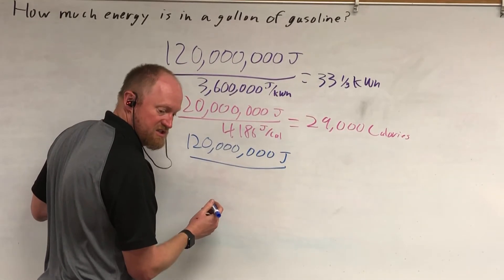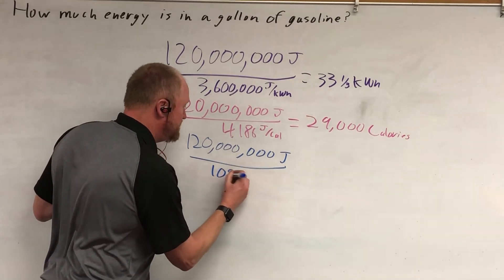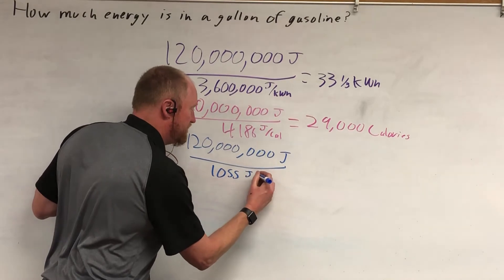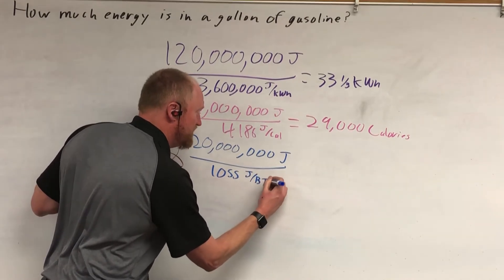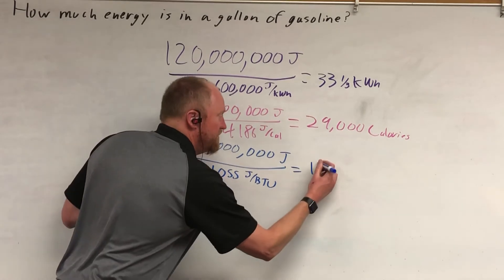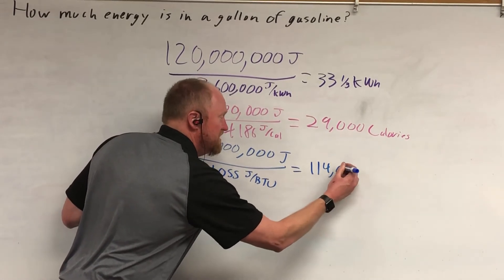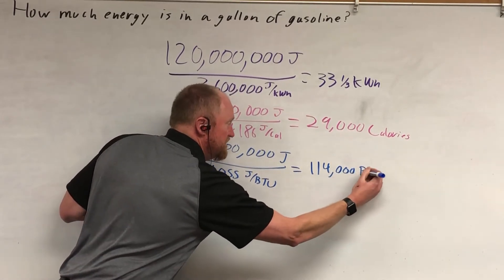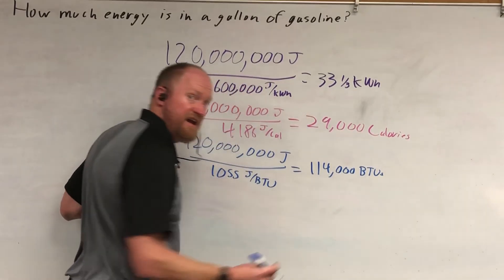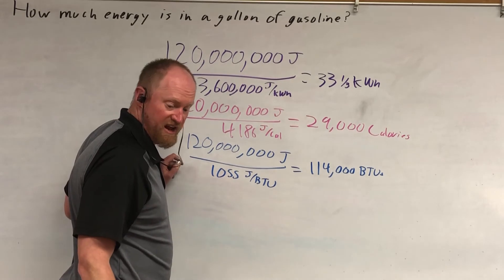Now, there is 1,055 BTU, or joules, for every British thermal unit, BTU. And if you do that, you find that you end up with about 114,000 BTUs of energy in a single gallon of gas.